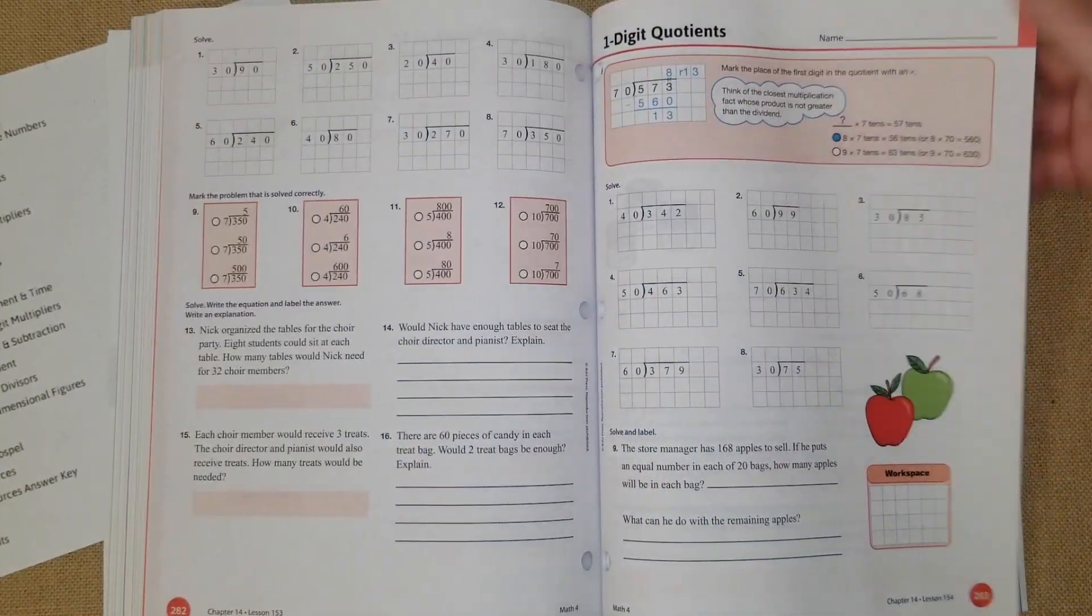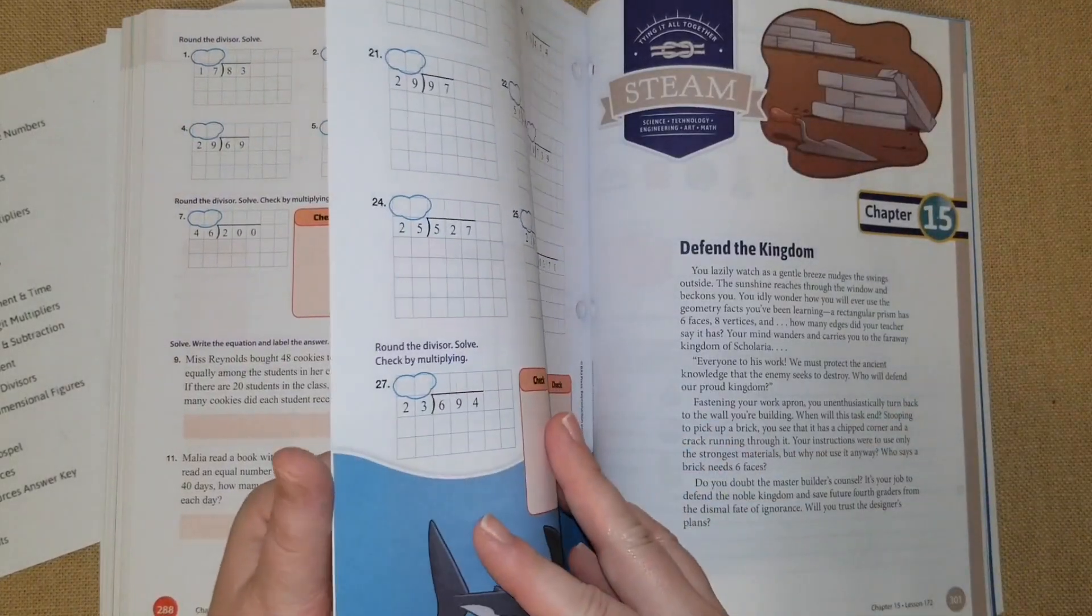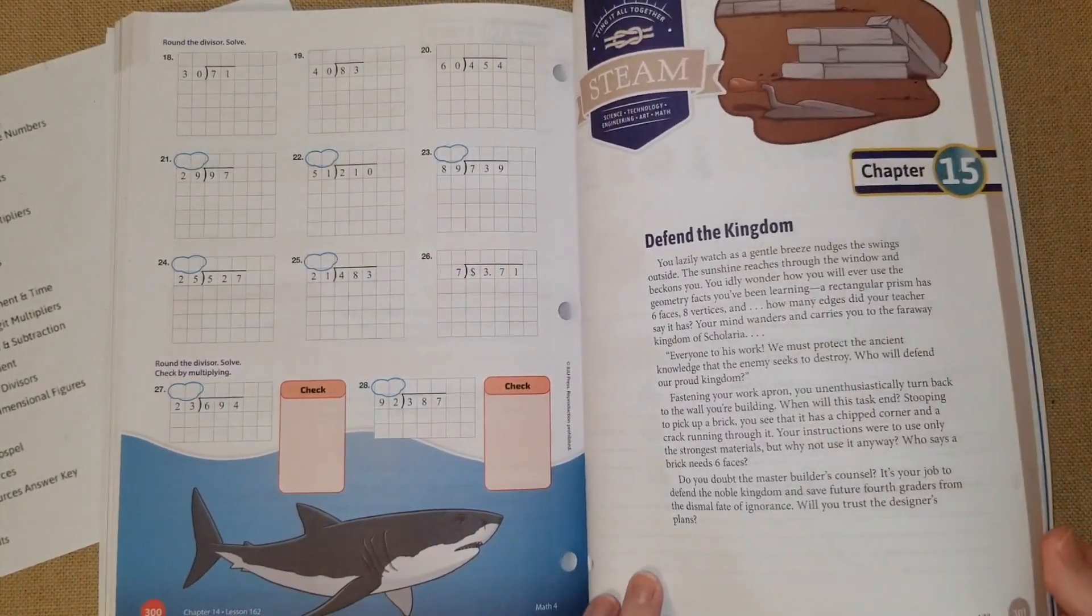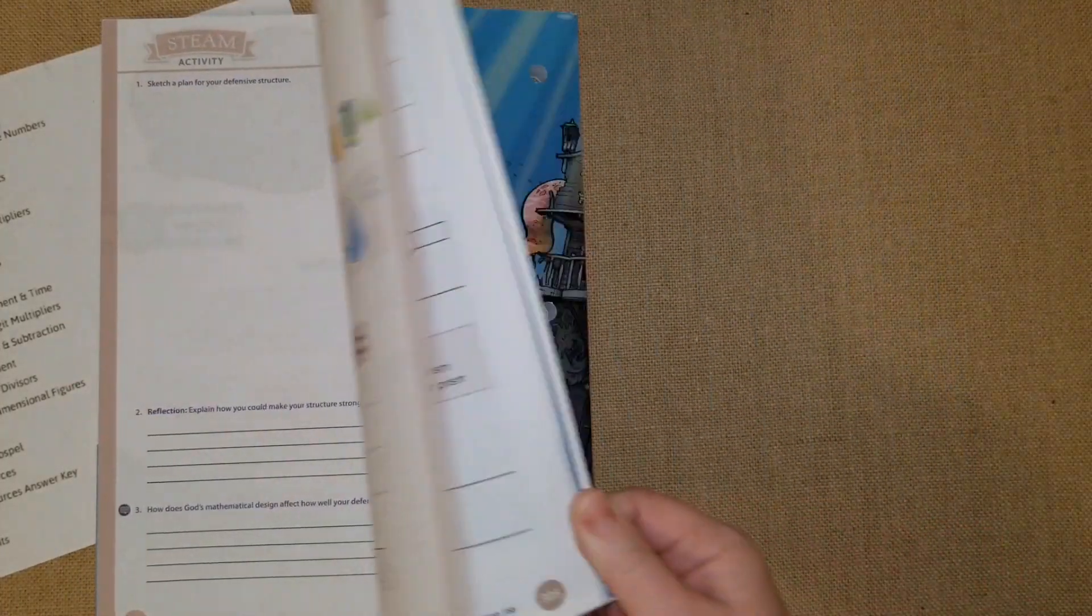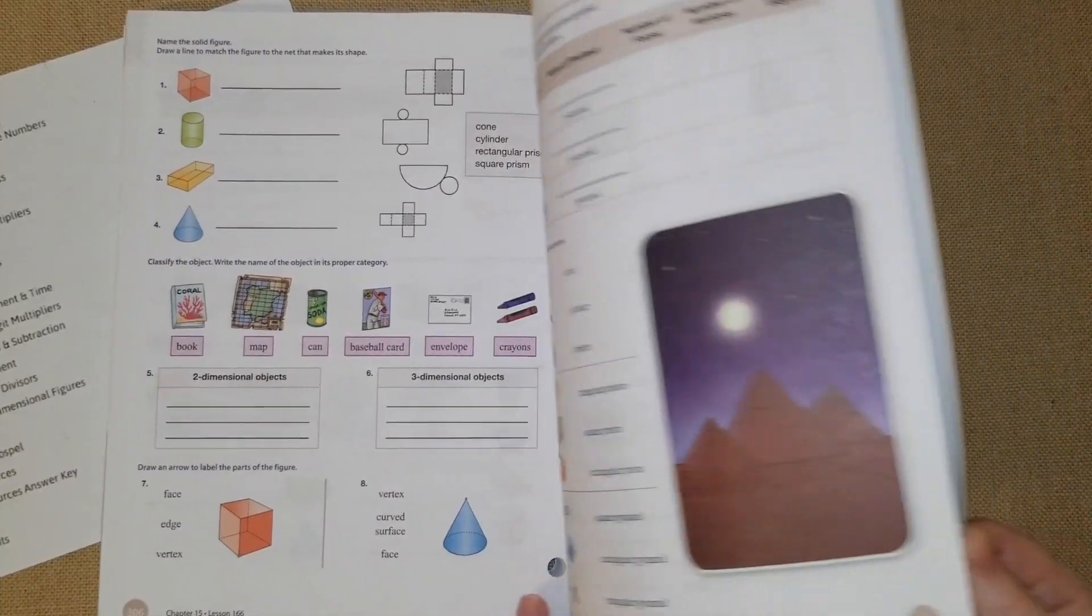Chapter fourteen is division with two divisors, so they're doing two-digit numbers against three-digit numbers, dividing by ten or multiples of ten. Then over here, chapter fifteen is geometry three-dimensional.